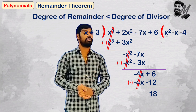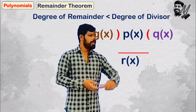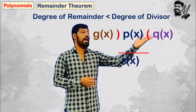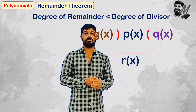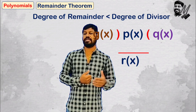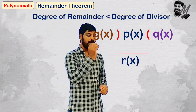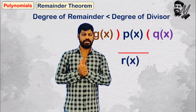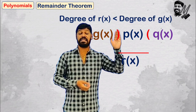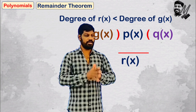Now the first divisor is divided into this polynomial. We call it P of x, we call the divisor G of x, we call the quotient Q of x, and we call the remainder R of x. So it is P of x divided by G of x giving Q of x.